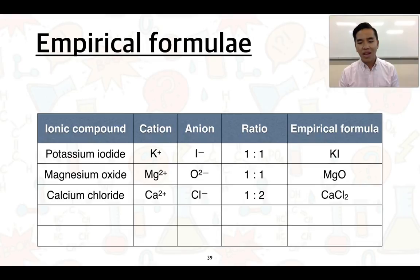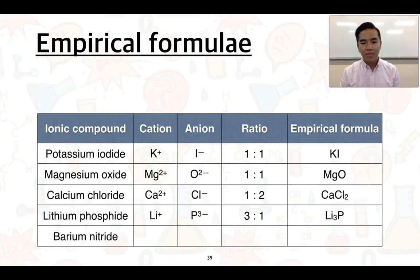Lithium phosphide is made up of Li+ and P3- ions. This has a ratio of three to one: three lithium ions to one phosphide ion, and so its formula is Li3P.